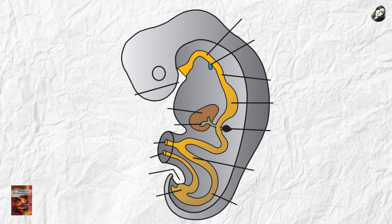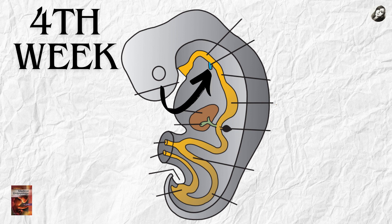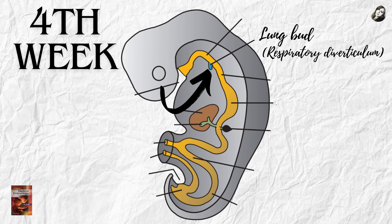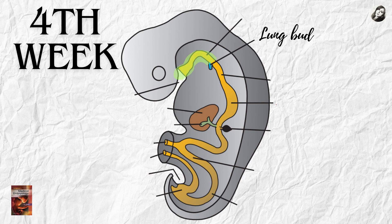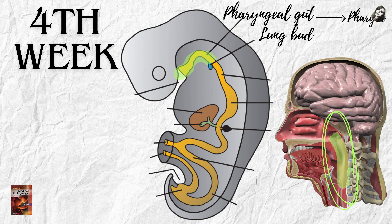When the embryo is approximately four weeks old, a bud appears at the ventral wall of the foregut, known as the lung bud or the respiratory diverticulum. The portion above the lung bud is the pharyngeal gut, which is a part of the foregut. The pharynx will develop from this portion, and below the pharynx we have the trachea in front and the esophagus behind.